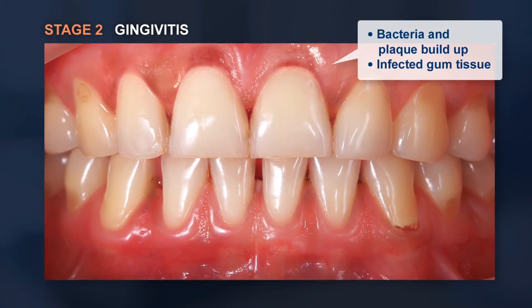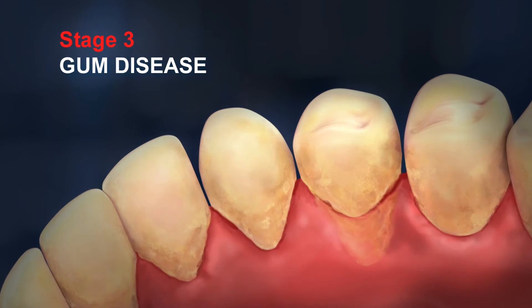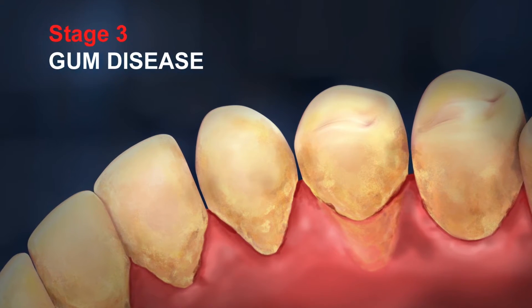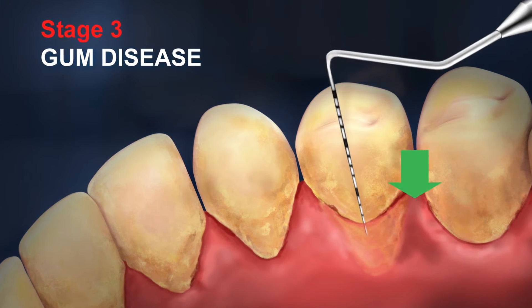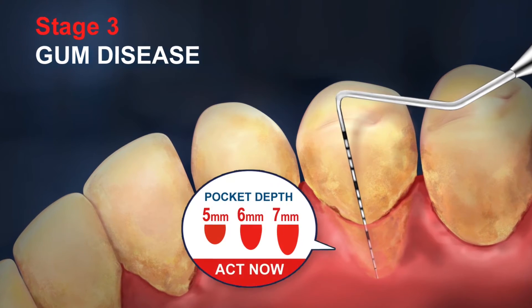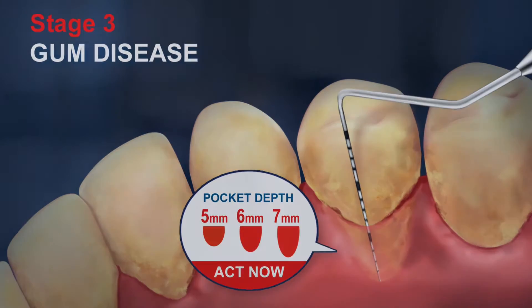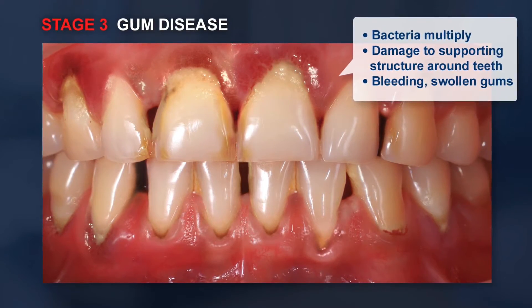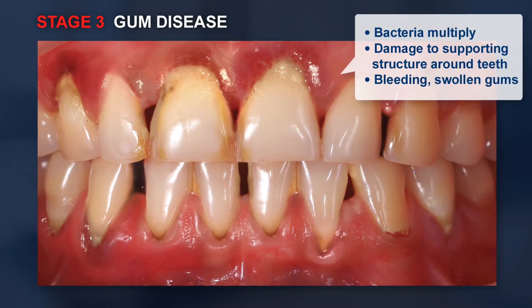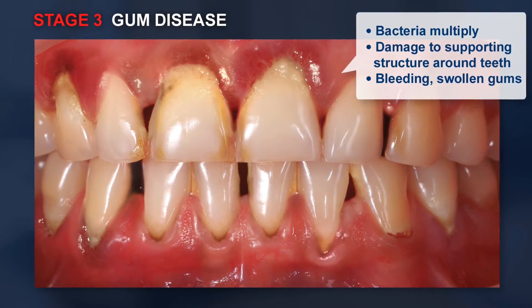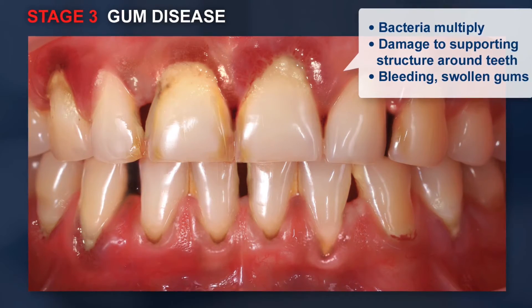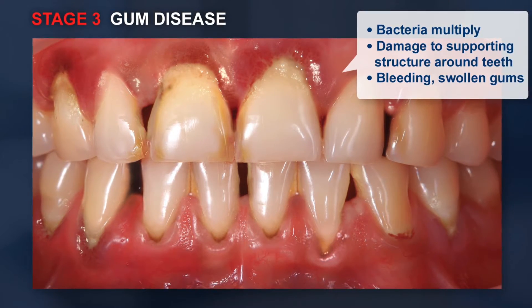If gingivitis goes untreated, the condition may advance to stage 3, a more aggressive form of the disease. Symptoms become more visible with tender, swollen gums that bleed easily. Pocket depths can reach 5 to 7 millimeters. Bacteria multiply, invade the gum tissue, and spread to the underlying bone that supports the teeth. Gums may bleed when probed and may appear swollen.